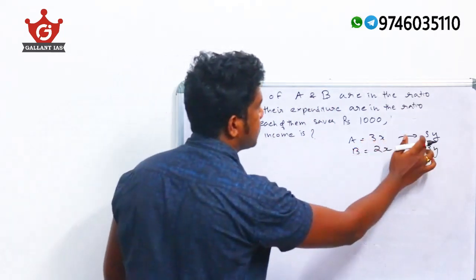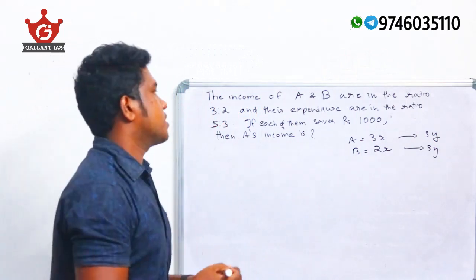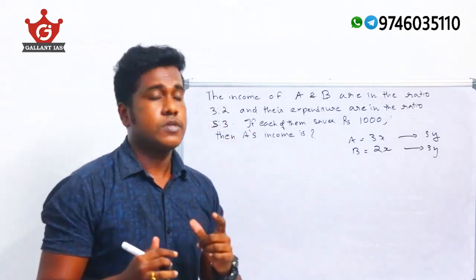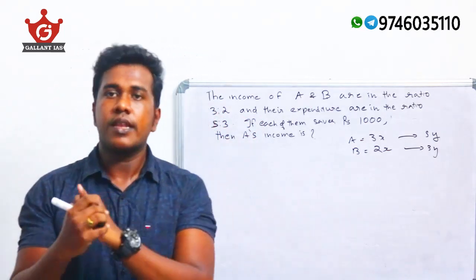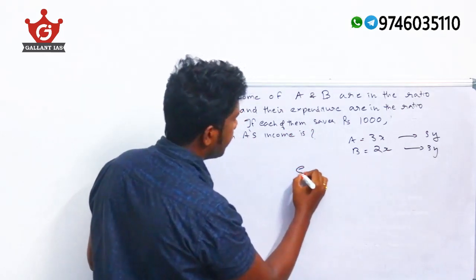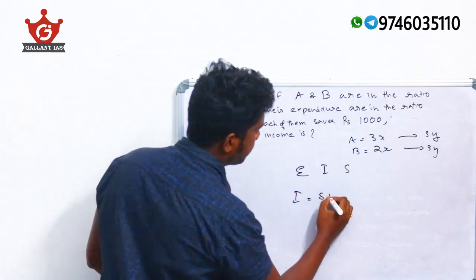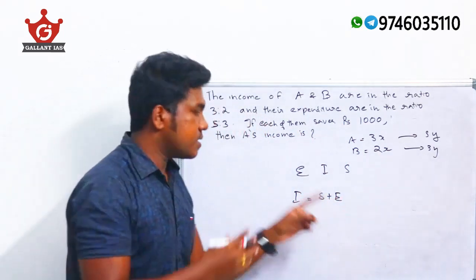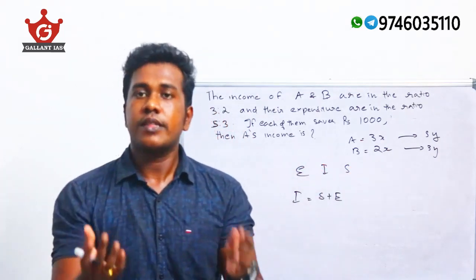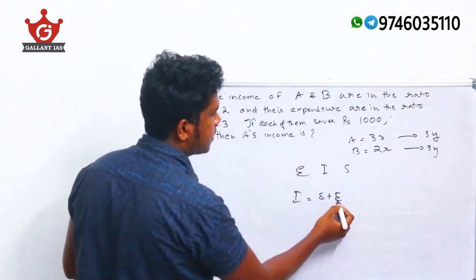It is said that each of them saves ₹1000. The key concept here is: income = savings + expenditure. So income minus expenditure equals savings.